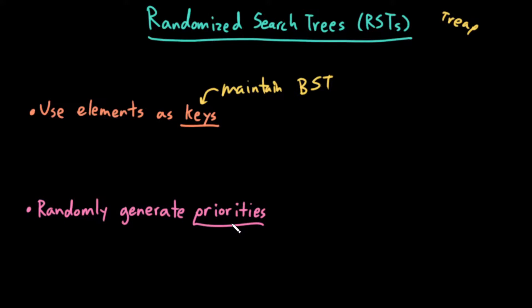So we're not given priorities in advance. As we see each key that we're about to insert, we just randomly generate a priority uniformly, and we maintain the heap property with respect to these randomly generated priorities.